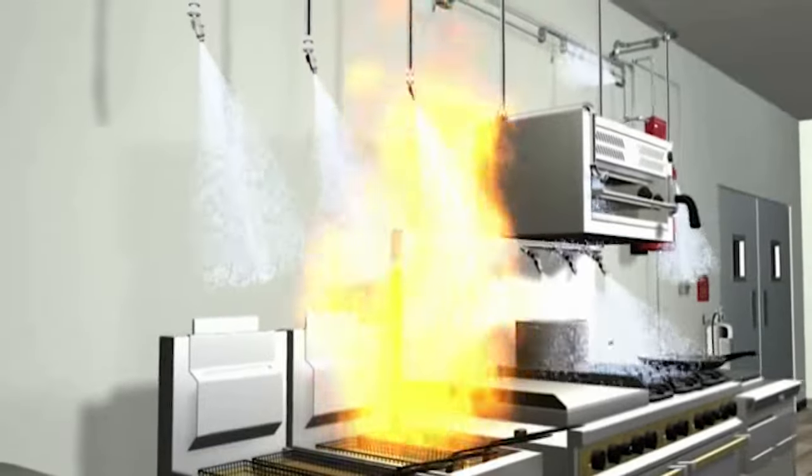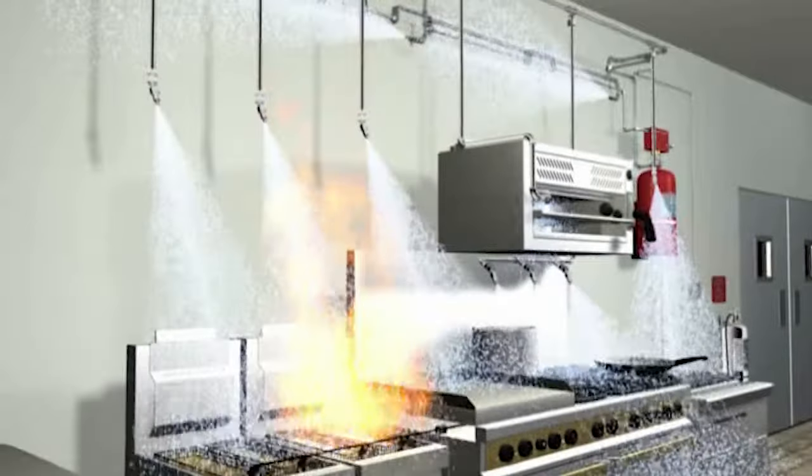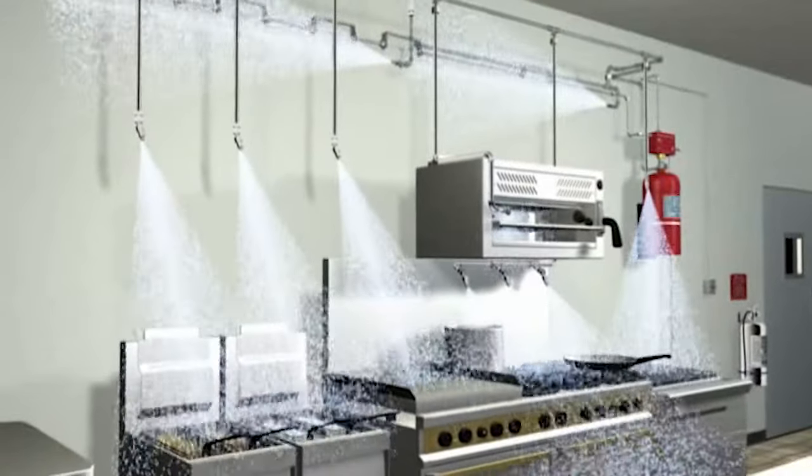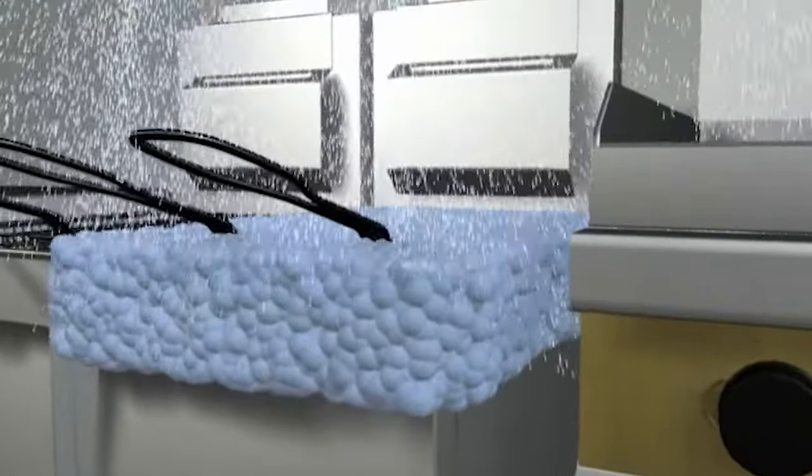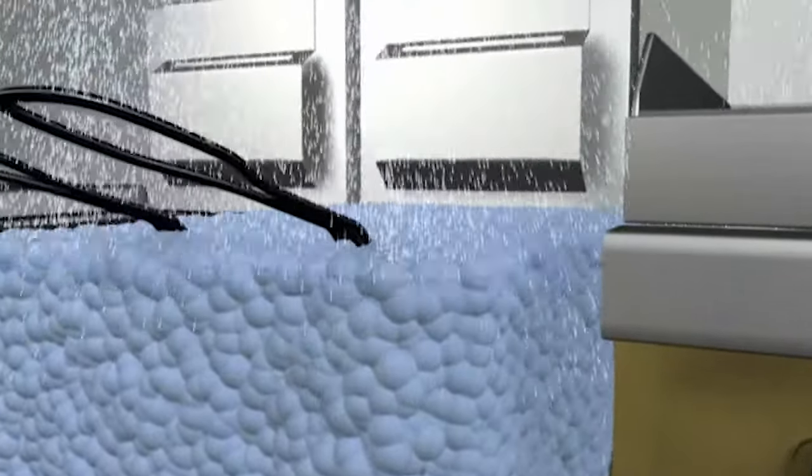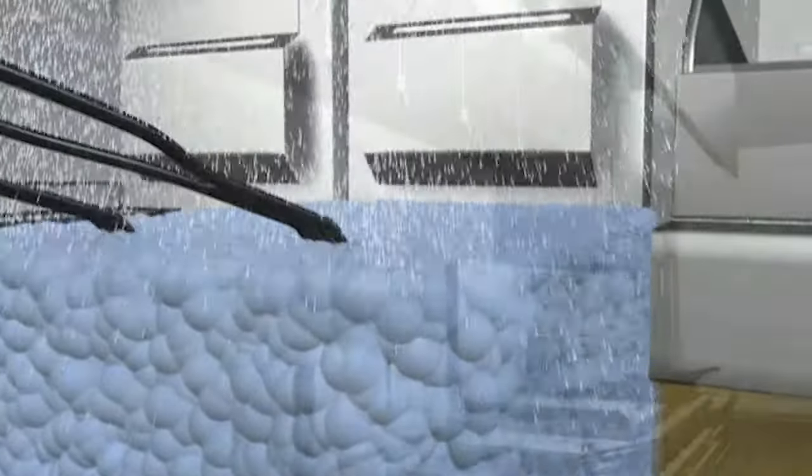The Pyrochem wet agent is then discharged onto the hazard from nozzles with specific spray patterns for maximum coverage. Once the wet agent is applied, it forms a vapor securing blanket to prevent the possibility of fire reflash.